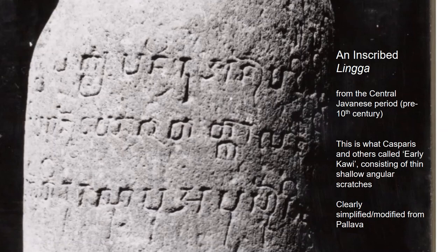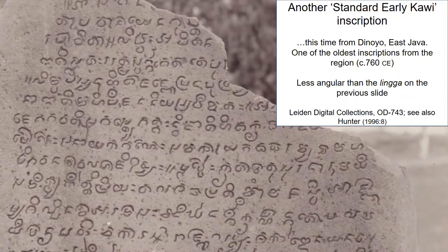These photographs are quite old, taken by a Dutch official in the 19th century — now accessible for free on the Leiden Digital Library. This is an inscribed linga — an aniconic or phallic representation of the god Shiva — from the central Javanese period, before the 10th century. You can see it is much less swirly and loopy, without those long ascenders and descenders of the Pallava script. It's carved in a much more shallow fashion, but is fundamentally just a simplified or modified form of Pallava.